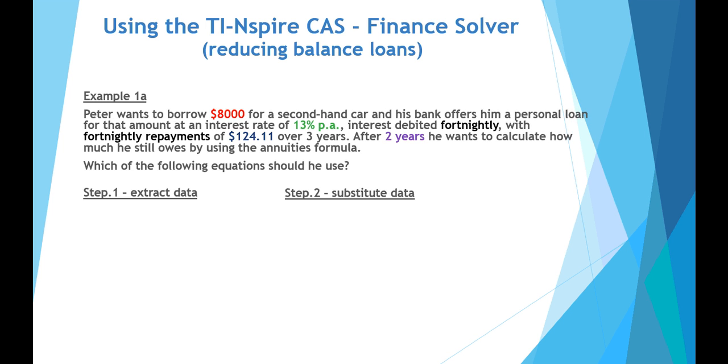Let's see if we can extract some information first of all. So P, the principal, or the amount borrowed, is $8,000. Q, the payment, fortnightly payment, is $124.11.